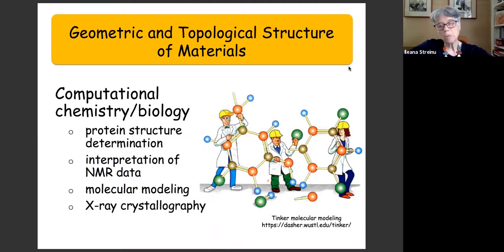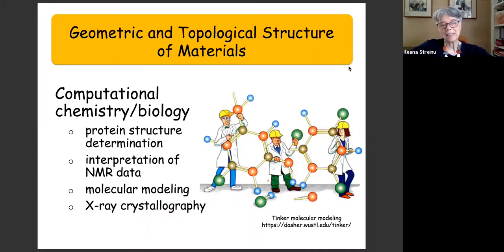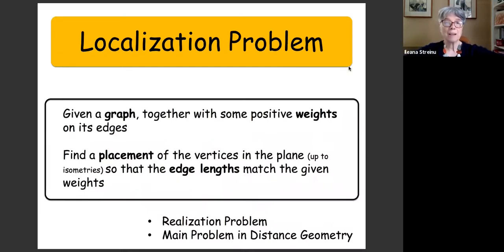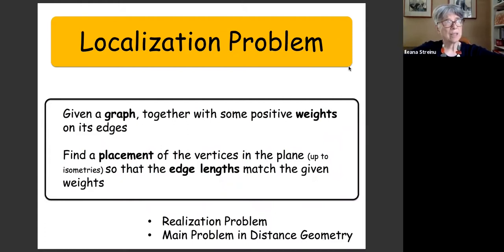Whether they are proteins or other types of chemicals solved with NMR or X-ray crystallography, ultimately we have a graph structure and some information about distances between the various atoms — some partial information, not always exact, but we'll assume the information is exact, though not all the distances are known. The question is: we want to put together the coordinates of the molecule.